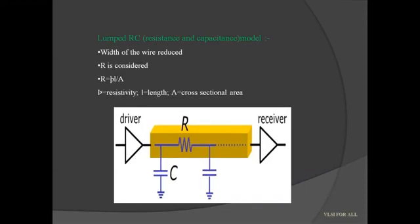The next one is the lumped RC model. In the lumped RC model, we use a wire which has a somewhat smaller cross-sectional area compared with the previous lumped capacitor model. The width of the wire is reduced, so the total cross-sectional area is reduced. Since R is inversely proportional to area, we must now consider the resistance. This is how the network looks like when we consider both resistance and capacitance.